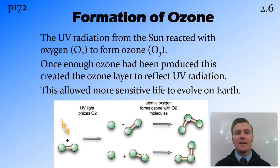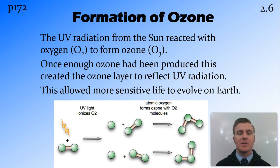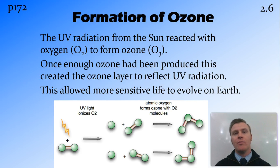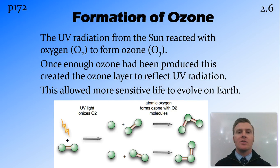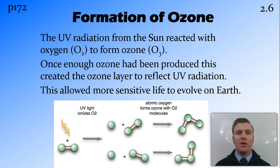Once oxygen started collecting in the atmosphere, the UV radiation from the sun was turning that oxygen into ozone. Ozone is O3 — it consists of three oxygen atoms. The UV light ionizes and splits an O2 into two free oxygen atoms, which are very reactive and react with two other O2 molecules to form O3, or ozone. Ozone absorbs and reflects UV radiation. This ozone accumulated and formed what we now know as the ozone layer, which protected the surface of the Earth by absorbing and reflecting that radiation, allowing more complex and more sensitive life to evolve.